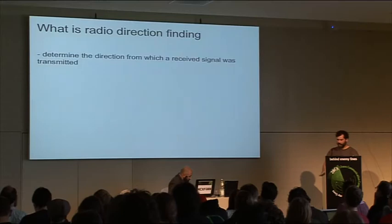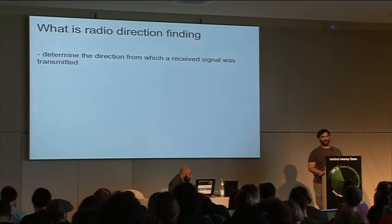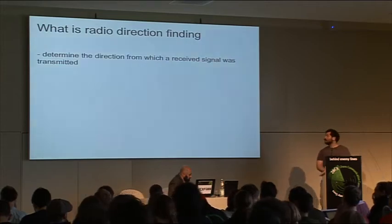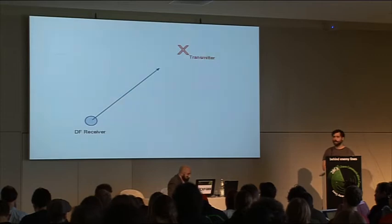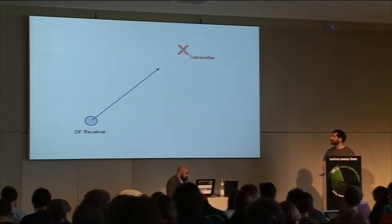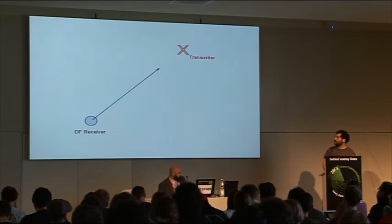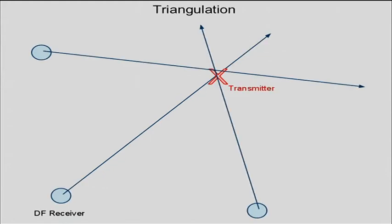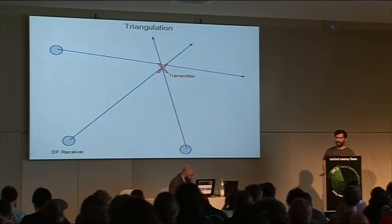So what's radio direction finding? It's determining the direction that a transmitter is relative to a particular receiver. If you have multiple stations, you can do triangulation. You can also do triangulation by making multiple observations with a single receiver, measuring the angle the transmitter is relative to the receiver. With one observation you don't know exactly where they are, but you know the direction. With multiple observations or receivers, you can triangulate and get a pretty good idea of where the transmitter is.